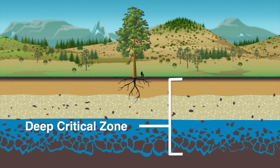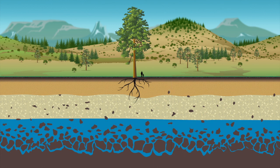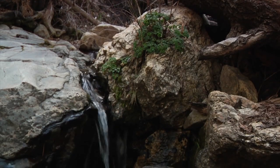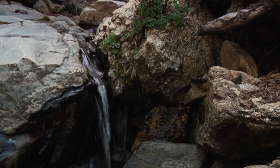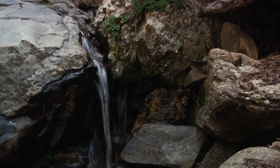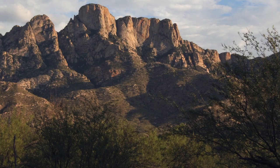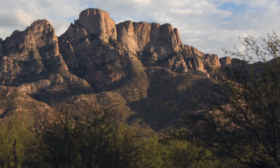By mapping the structure of the land below the surface — a region called the deep critical zone — we develop a better understanding of how that underlying structure influences what happens at the Earth's surface. For example, the way that water travels through the deep critical zone plays a key role in maintaining ecosystem sustainability.